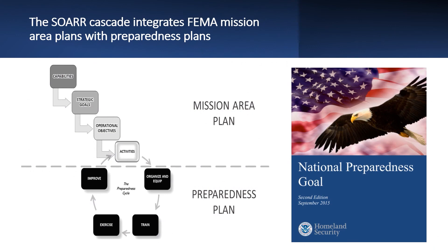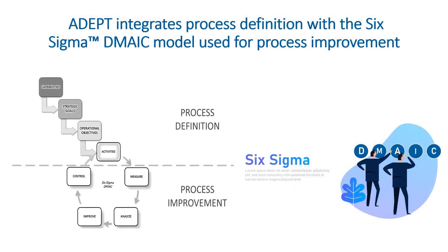Use of this hierarchical format also allows us to identify and define the process of the activity itself. Once identified, this activity may then be used as the starting point for integration into multiple other systems, including integration of ADEPT with the US FEMA Preparedness Cycle. The standardization of the ADEPT format also allows for integration with nearly every model for quality control, including Six Sigma. Here's an example of how the SOAR format defines the process and then integrates at the activity level with the widely used Six Sigma process for quality improvement.